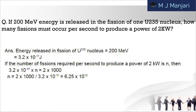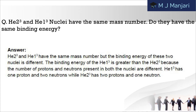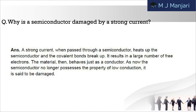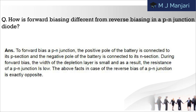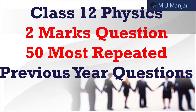Next: if 200 mega electron volts of energy is released in the fission of one uranium-235 nucleus, how many fissions must occur per second to produce a power of 2 kilowatts? Next: Helium-3 and Hydrogen-3 nuclei have the same mass number. Do they have the same binding energy? Next: why is a semiconductor damaged by a strong current? Next: the resistance of a p-n junction is low when forward biased and high when reverse biased. Explain. Next: how is forward biasing different from reverse biasing in a p-n junction diode?